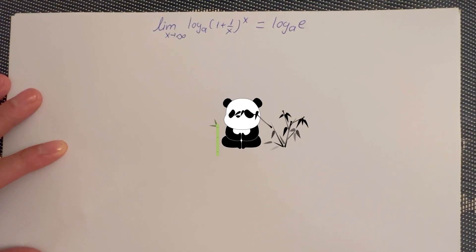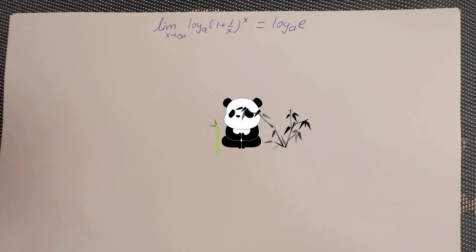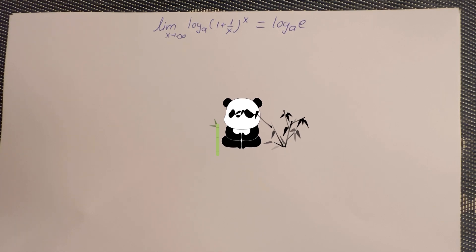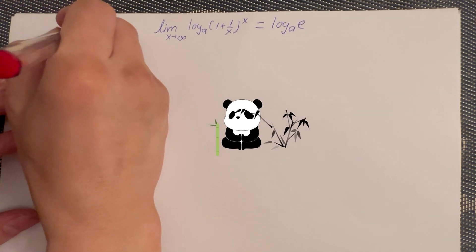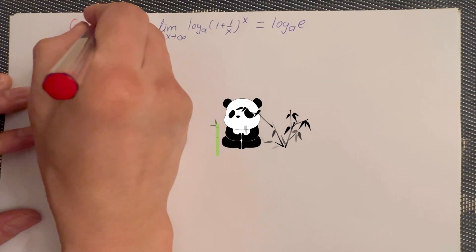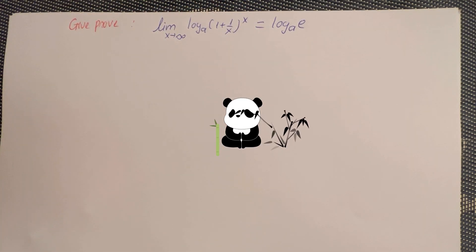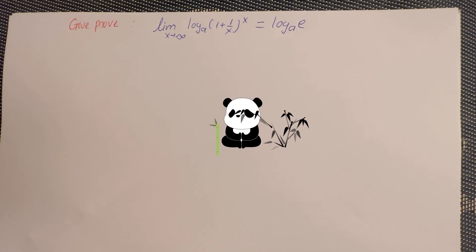Hi guys, today I got the limit when x becomes infinity of log A of 1 plus 1 over x power x, equals log A of e. The question asks you to give a proof of that one. So how do you sort that out and how do you show the proof?